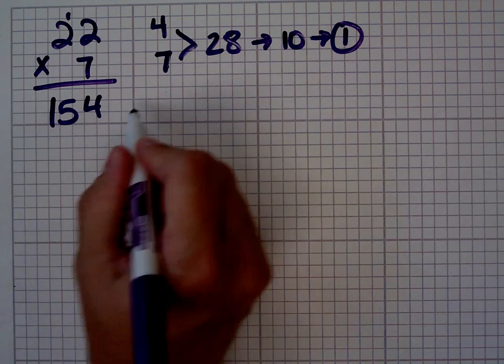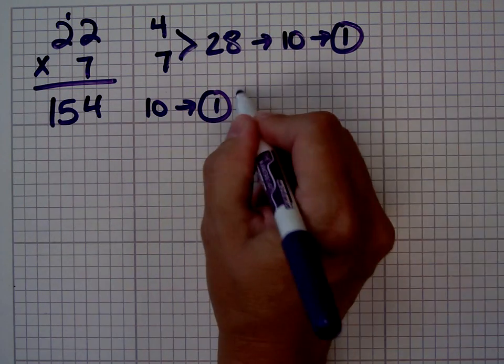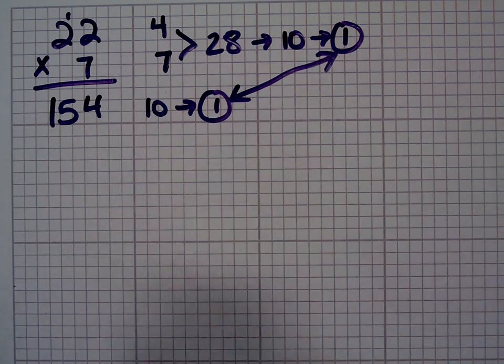154, the digital root is 10, 1 plus 0 is 1, and our digital roots match. So the product of the digital roots should be the same as the digital root of the product, very similar to multiplication, I'm sorry, very similar to addition.